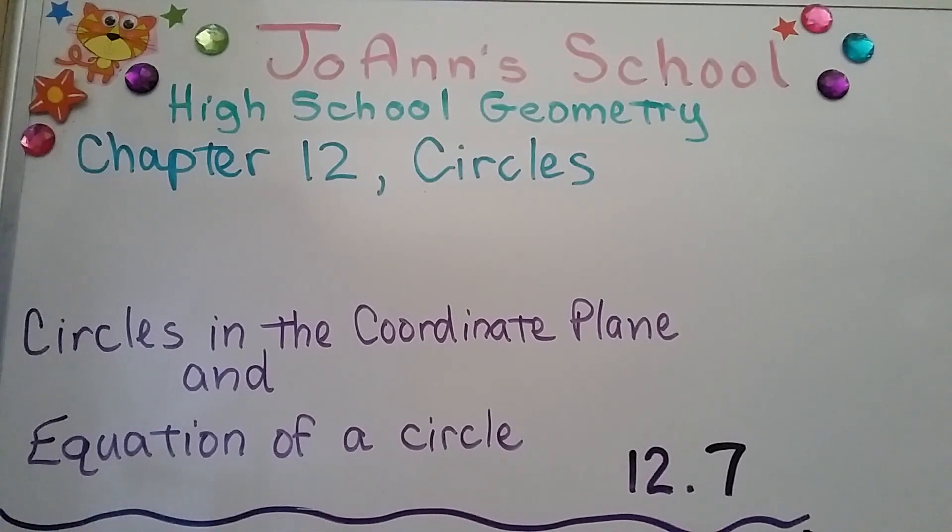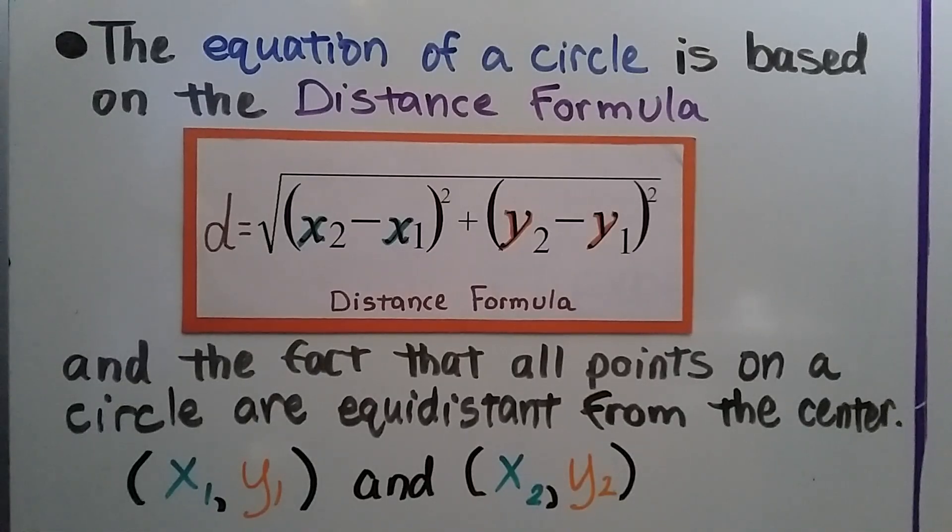Circles in the coordinate plane and equation of a circle were at 12.7. The equation of a circle is based on the distance formula and the fact that all points on a circle are equidistant from the center.